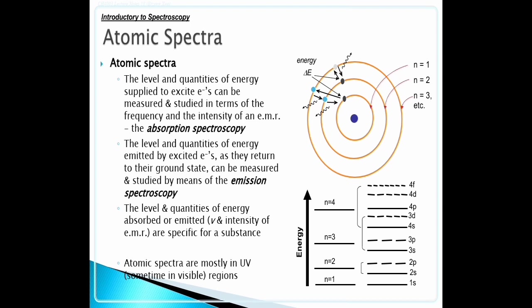The level and quantities of energy emitted by excited electrons as they return to their ground state can be measured and studied by means of emission spectroscopy. The level and quantities of energy absorbed and emitted, and intensity of EMR, are specific for each substance. Atomic spectra are mostly in ultraviolet, sometimes visible regions.